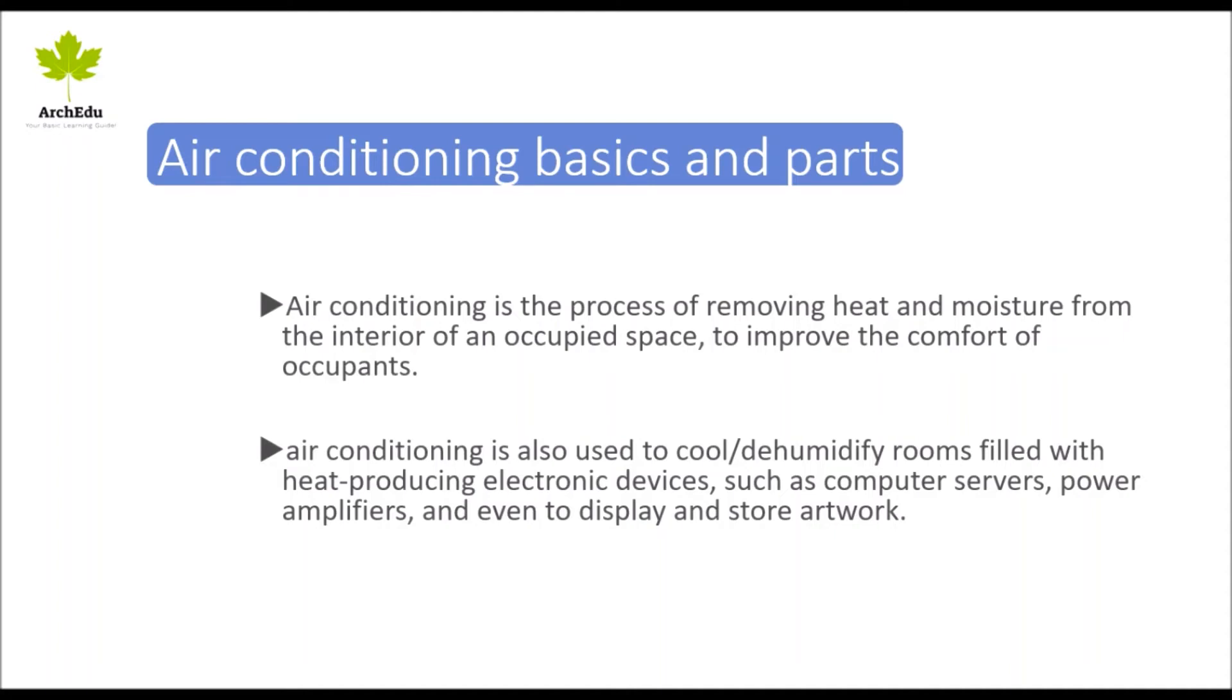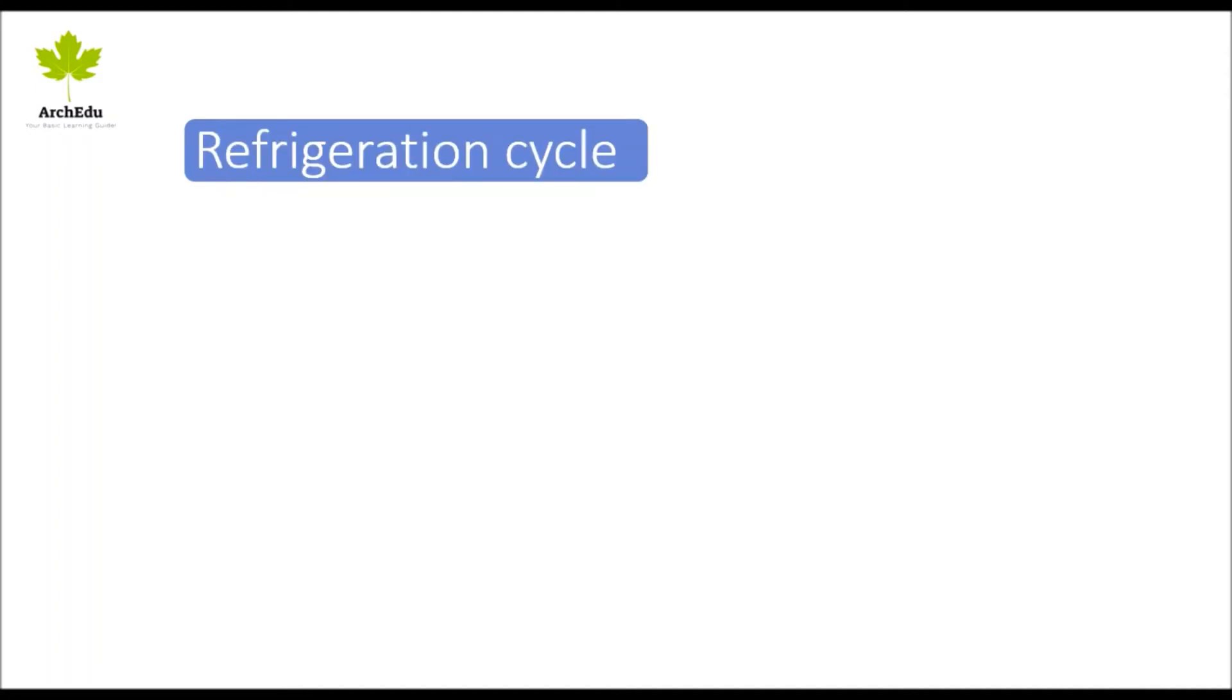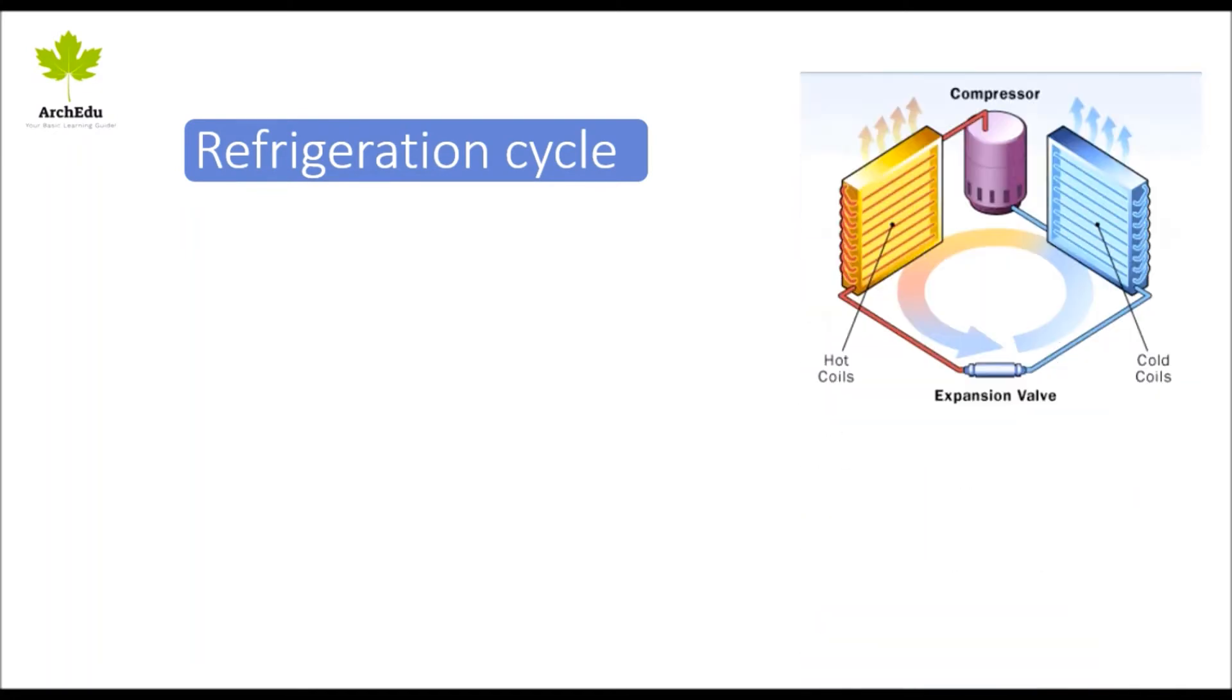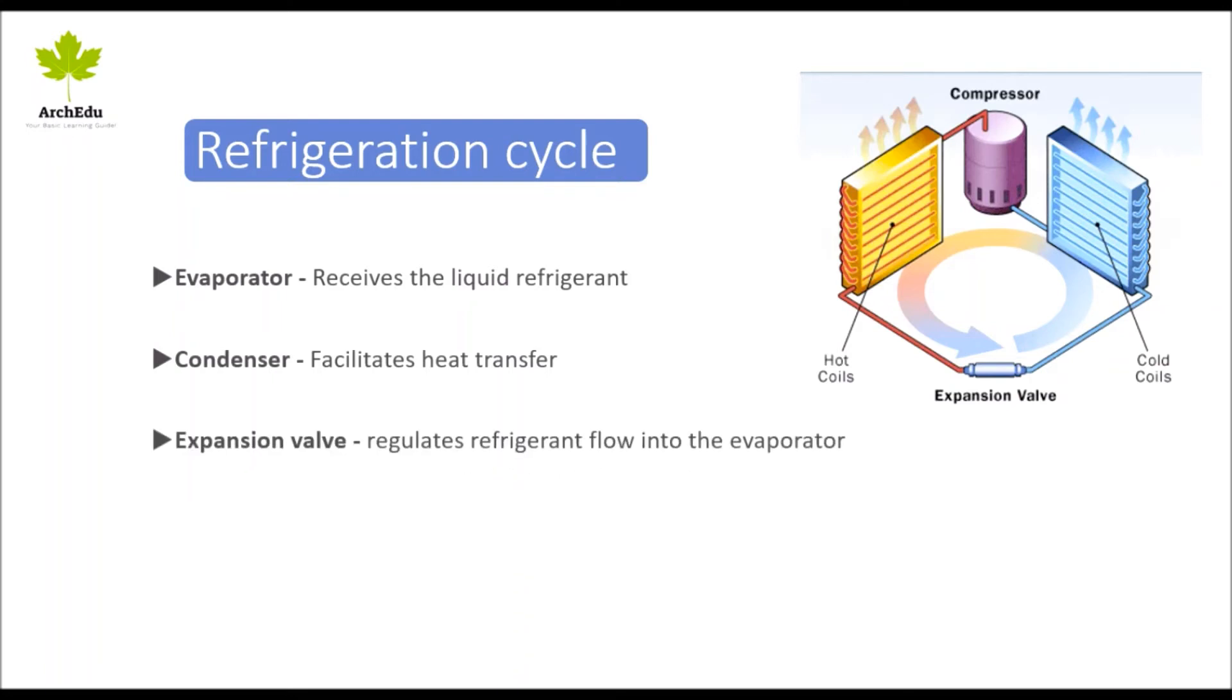Moving to the refrigeration cycle. The refrigeration cycle is the same in your kitchen fridge, air conditioners, or any chilling equipment. Broadly, the refrigeration cycle is divided into four parts: evaporator, condenser, expansion valve, and compressor.